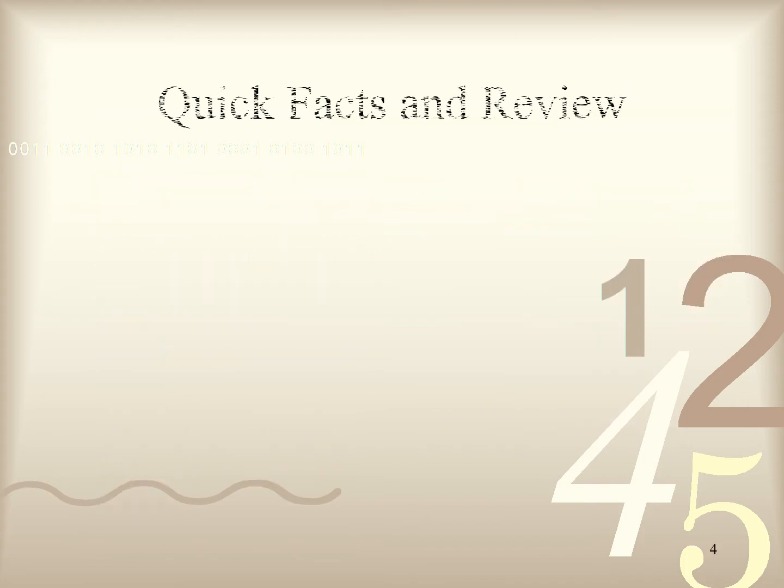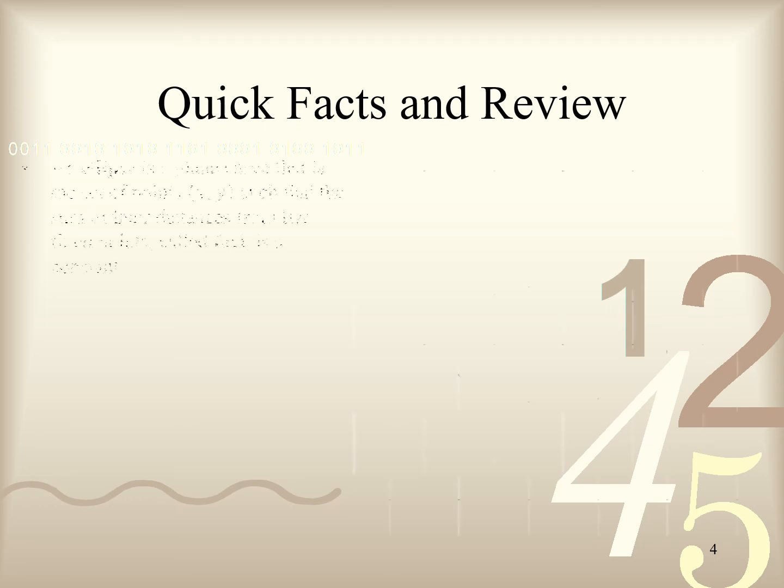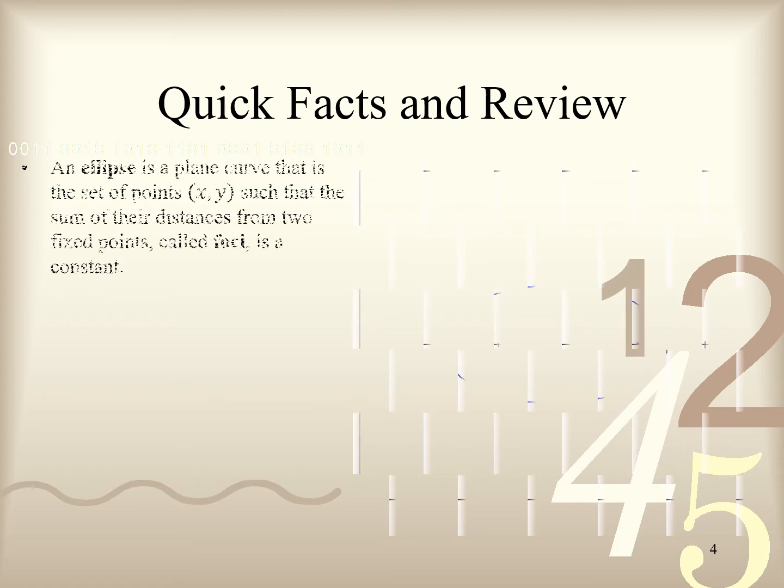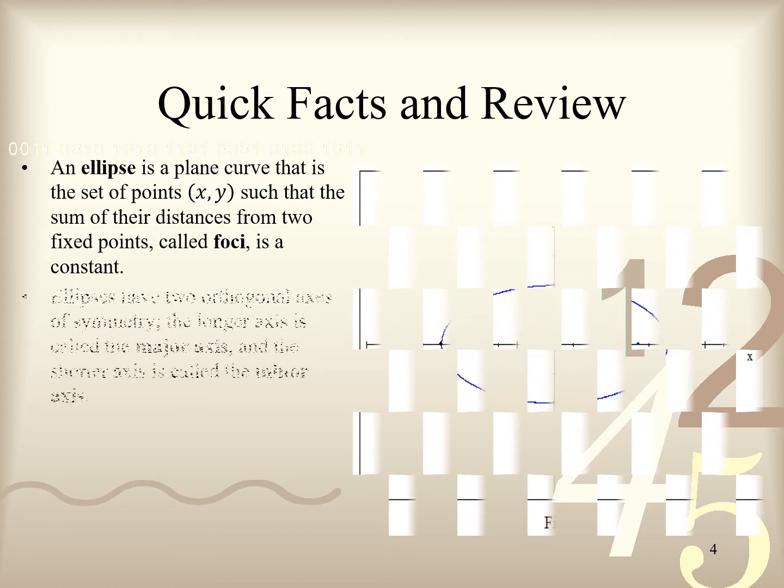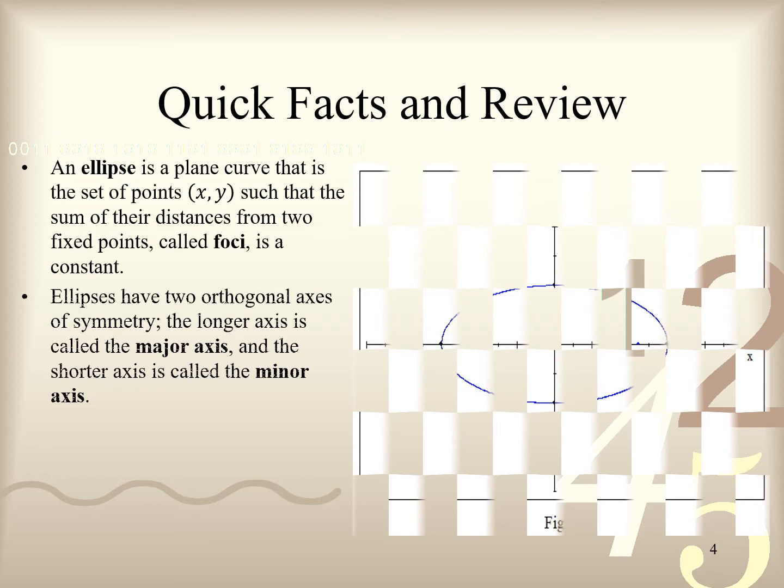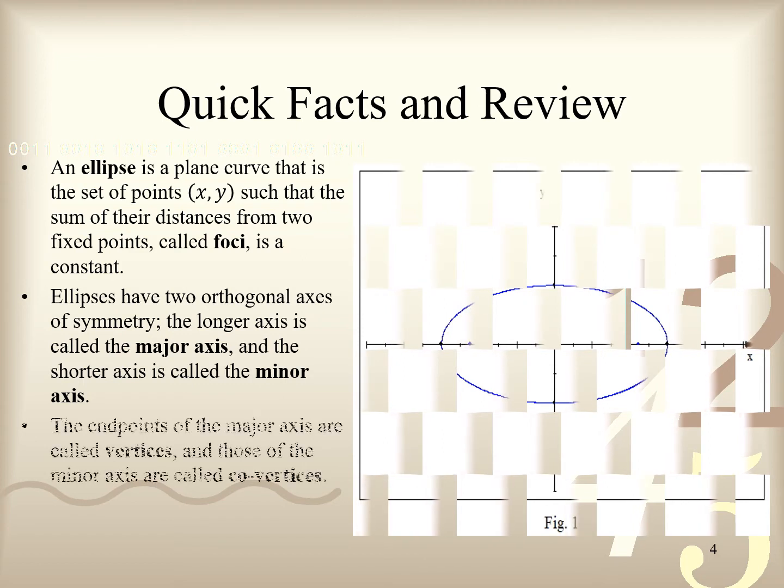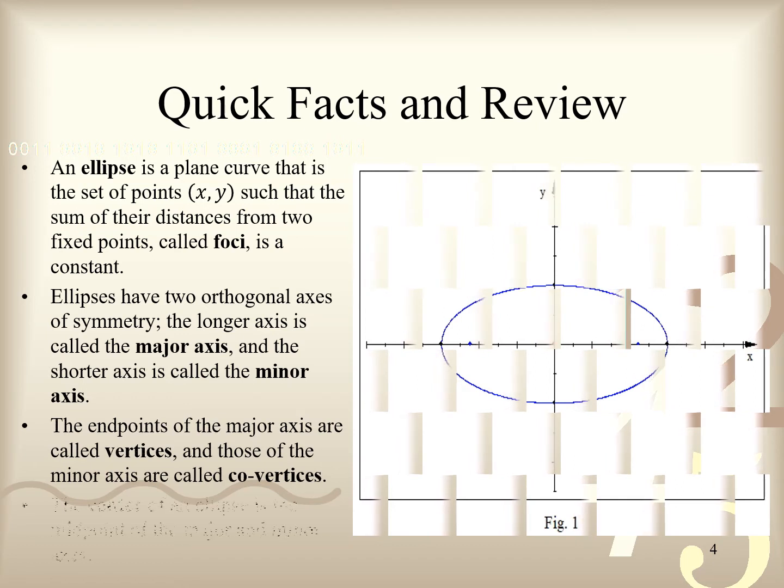Here are some quick facts and review we will need to solve this problem. First, by definition an ellipse is a plane curve that is the set of points, given by coordinates (x, y), such that the sum of their distances from two fixed points, called foci, is a constant. Second, ellipses have two orthogonal axes of symmetry, where the longer axis is called the major axis, and the shorter axis is called the minor axis. Next, the endpoints of the major axis are called vertices, and those of the minor axis are called co-vertices. Finally, the center of an ellipse is the midpoint of the major and minor axes.